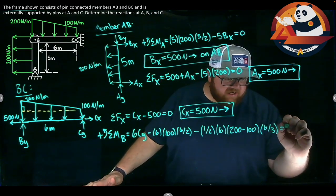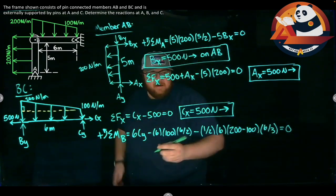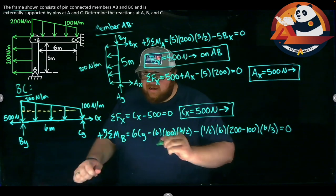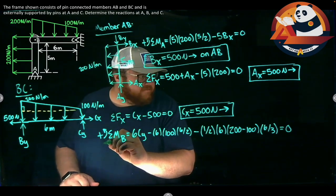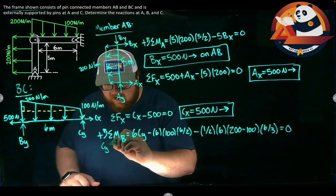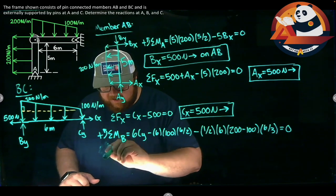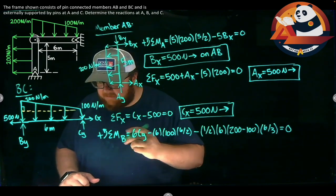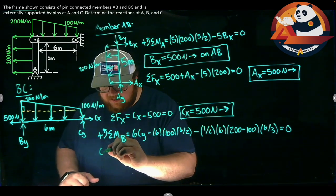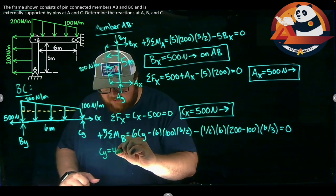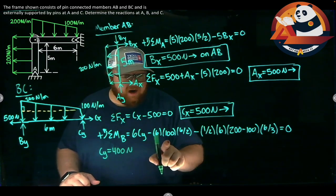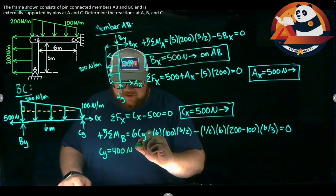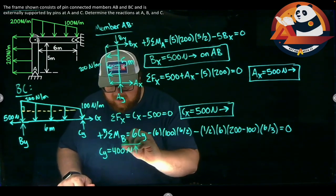Solving for CY. I'm going to get that CY works out to be 400 newtons. CY equals 400 newtons. I get a positive number from this so I have the right direction. We are going up.